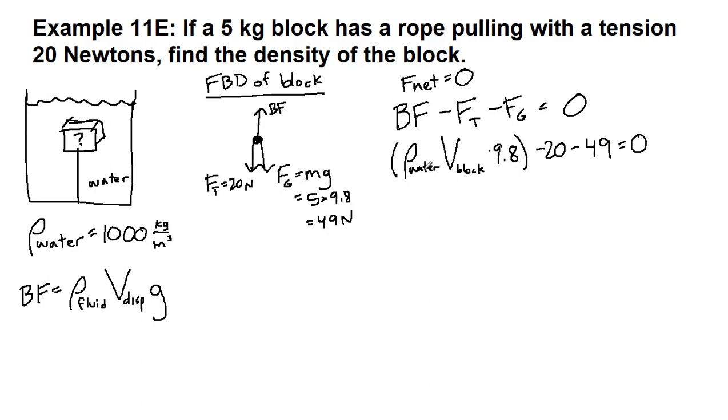Alright, so the density of water we can calculate. So what we're going to do is we're going to get the volume of the block to be the only unknown. So we have 1,000 times that volume times 9.8 minus 69 newtons equals 0.